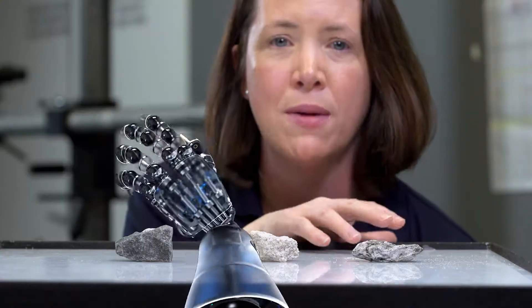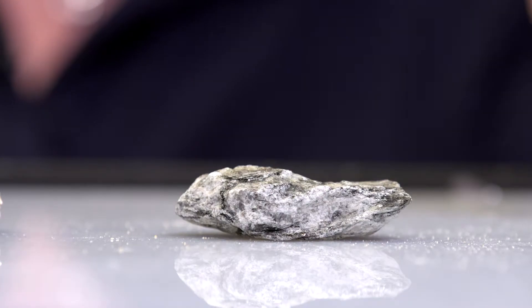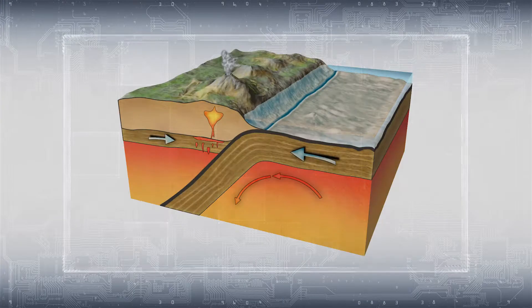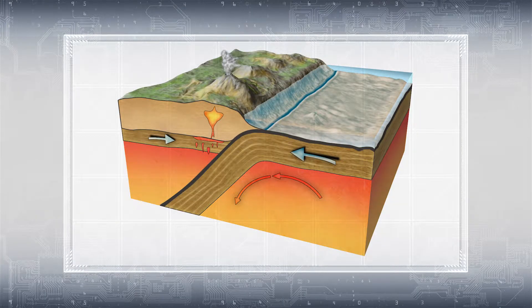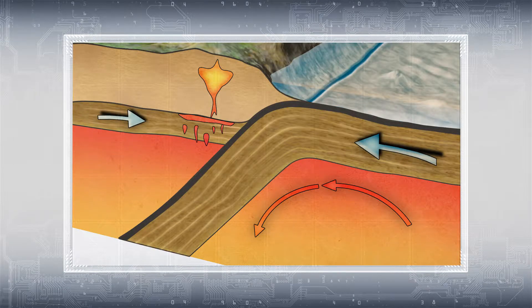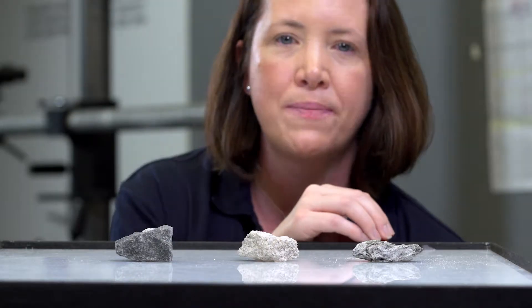The last rock group, metamorphic rocks, can actually be formed of any type of rock. Essentially they are igneous, sedimentary, or metamorphic rocks that are buried deep into the earth's surface and are exposed to pressure and time, and eventually are uplifted back to the earth's surface as these very unusual metamorphic rocks.